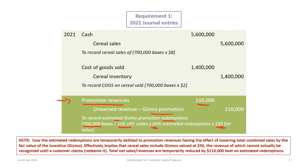It's important to understand what's happening here. The estimated redemptions are temporarily debited to the promotional revenues account, which has the effect of lowering total combined sales by the fair value of the incentive. Even though the company sold cereal for $5.6 million, there is a debit to the promotional revenue account for the fair value of the gizmo. This implies that cereal sales include gizmos valued at $50, the revenue of which cannot be recognized until a customer redeems. So total net sales and revenues are temporarily reduced by $210,000 based on estimated redemptions.